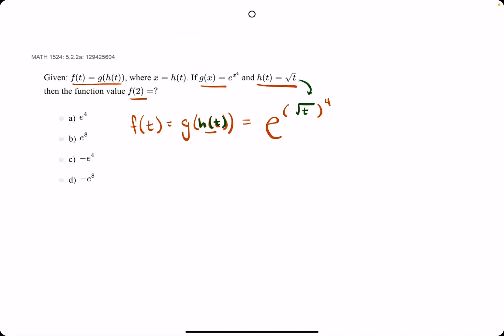So then they ask us to find, so again, this is just f of t. And now we need to find f of 2, so we want to plug in 2 wherever we see a t. So we have the square root of 2 to the fourth in the exponent.